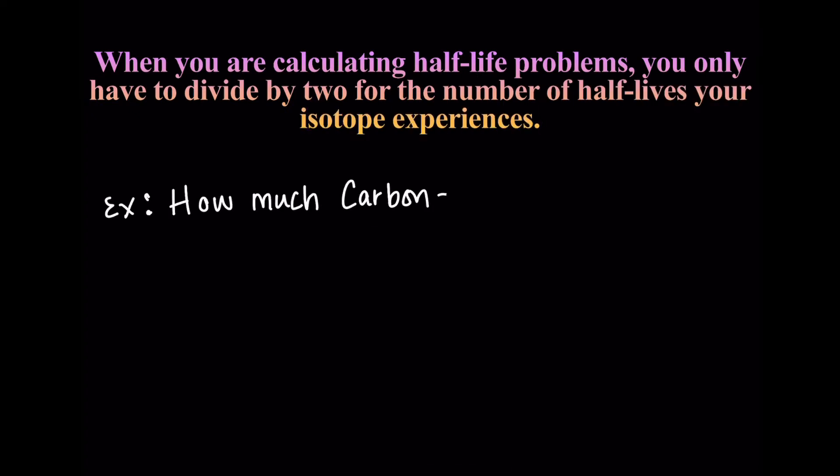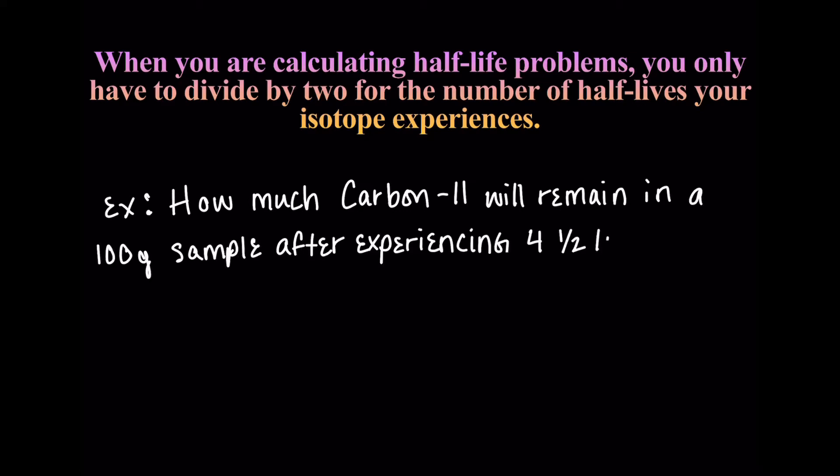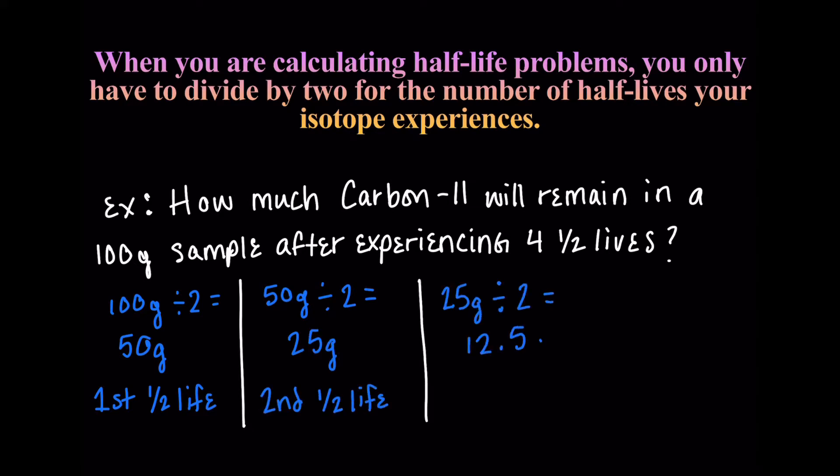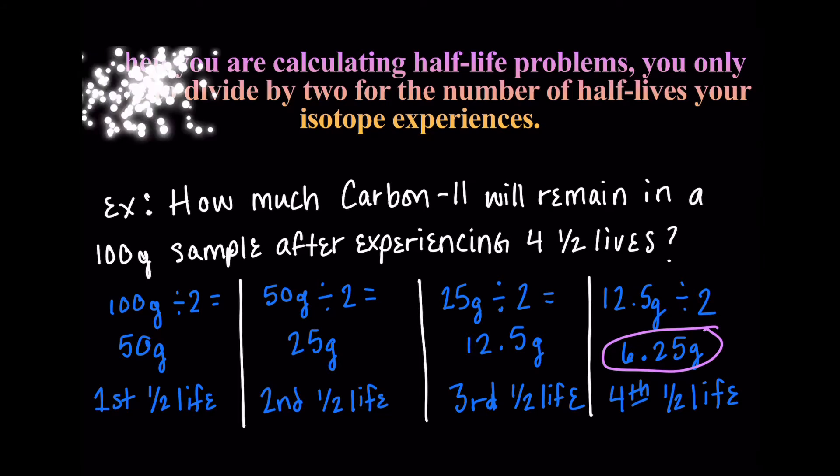So when you're calculating half-life problems, you only have to divide by two for the number of half-lives your isotope experiences. There is a problem like this on your homework. It says how much carbon-11 will remain in a 100 gram sample after experiencing four half-lives. So I just take 100 and I divide it by two. That's my first half-life. I take the answer 50, divide that by two. That's my second. I keep going. And at the end of four half-lives, I get 6.25 grams.